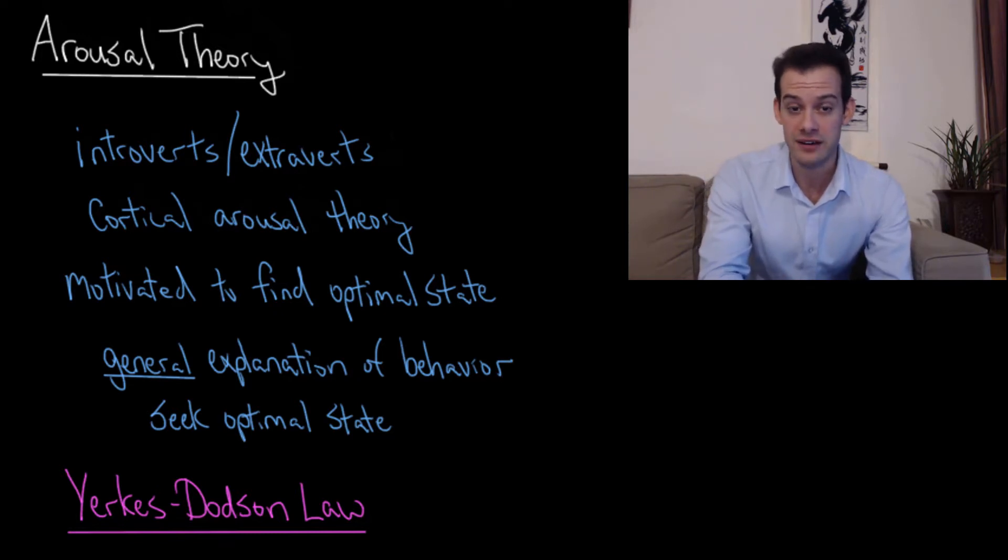What Eysenck suggested was that extroverts had lower levels of cortical arousal, and what this meant is that they were motivated to seek out more stimulation. They were more motivated to seek out things like social interaction that would increase their level of cortical arousal up to some more optimal state.